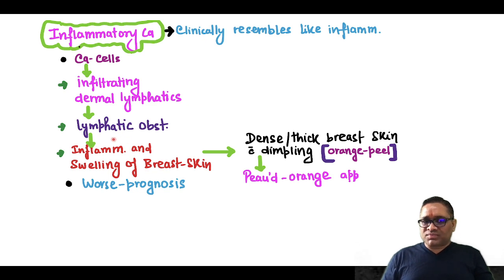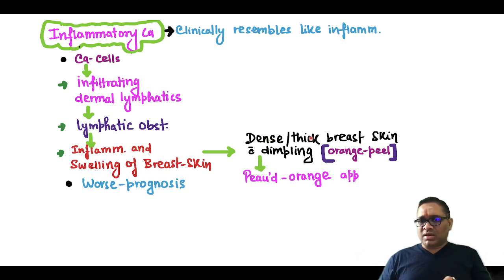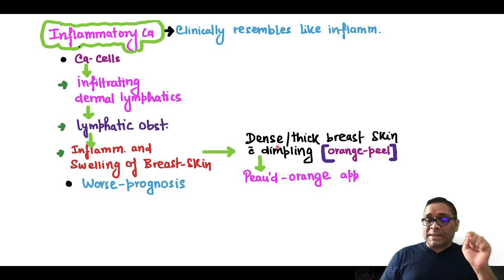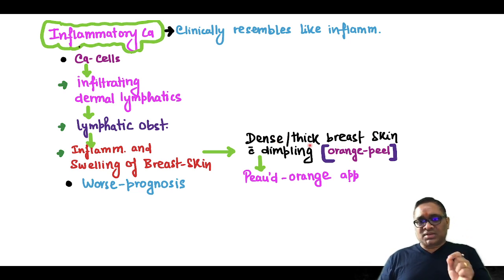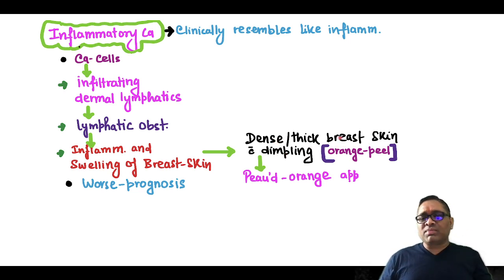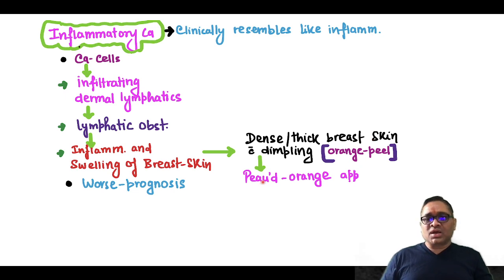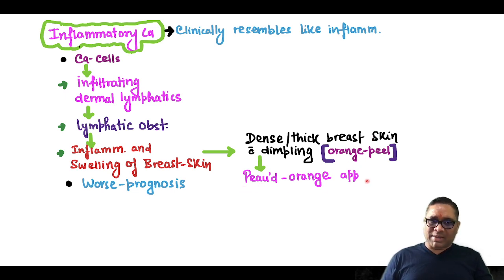And because of this inflammation and swelling, you will see dense, thick breast skin with dimpling. Because of this dense, thick breast skin with dimpling, this will give you an orange peel appearance, which is called as peau d'orange appearance.